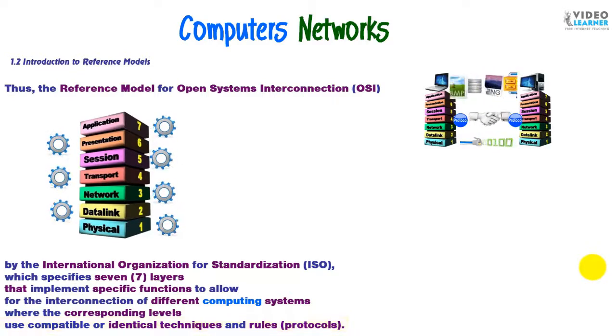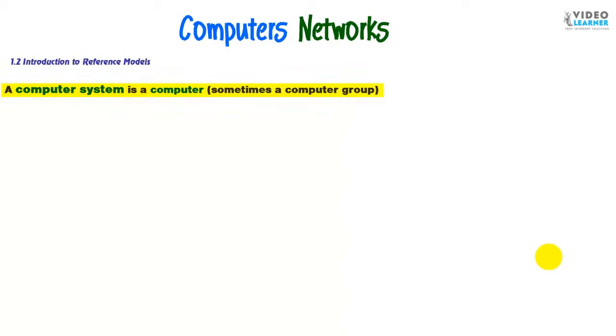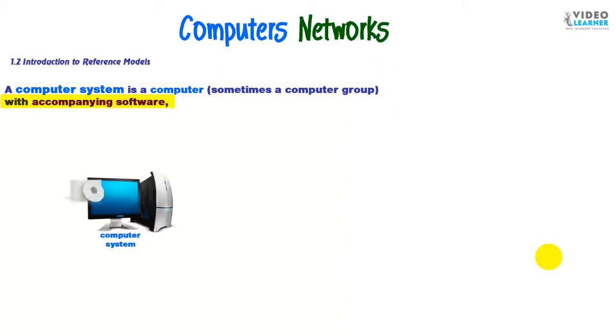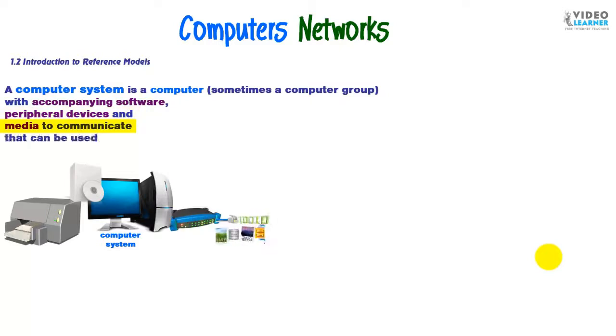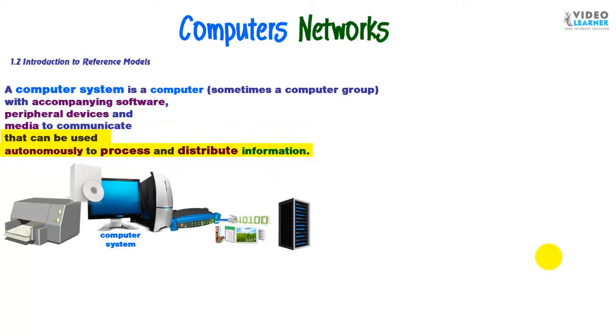A computer system is a computer, sometimes a computer group with accompanying software such as operating system, Windows or macOS, peripheral devices and media to communicate that can be used autonomously to process and distribute information.